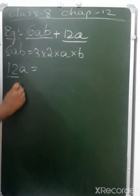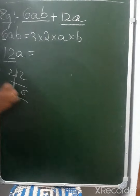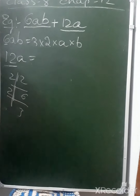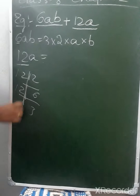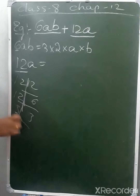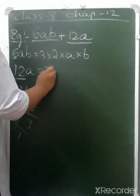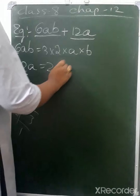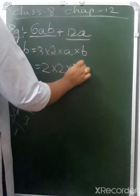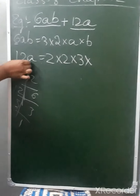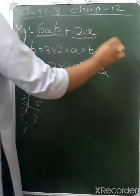That means 12 can be written as 2 into 2 into 3. And we still have one more term, which is a.